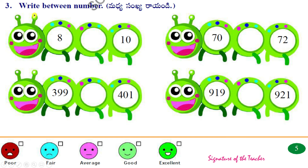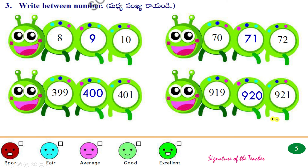Next, write the between numbers. 8, dash, 10 — the between number is 9, so: 8, 9, 10. Next: 70, 71, 72. Next: 399, 400, 401. Next: 919, 920, 921. Now we will write the between number.